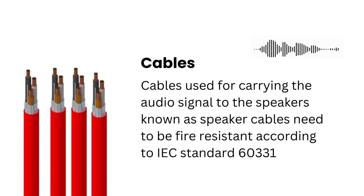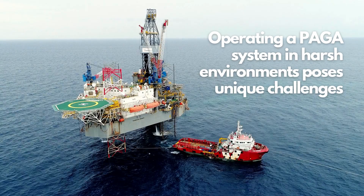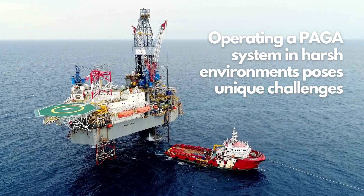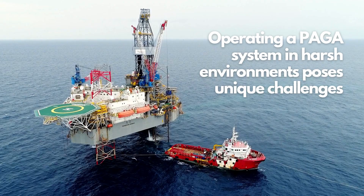Operating a PA-GA system in harsh environments poses unique challenges. The system must be reliable, resilient, and capable of overcoming environmental constraints. Some features that make the PA-GA system suitable for such conditions include redundancy, hazardous area certification, and environmental protection.